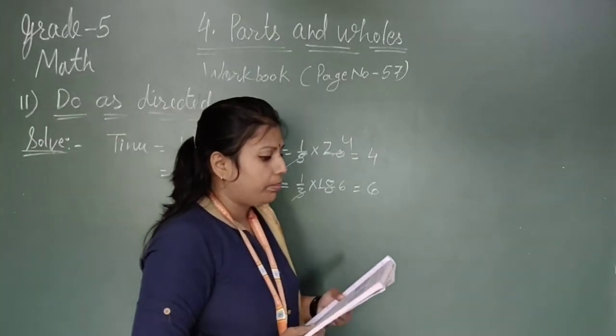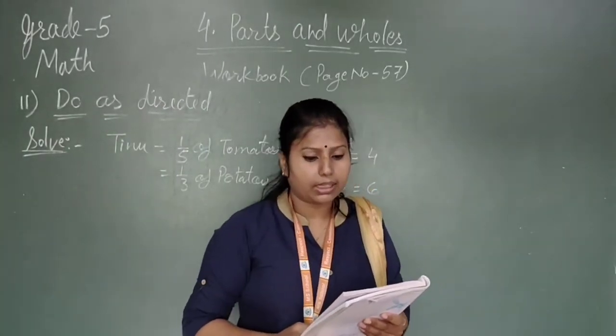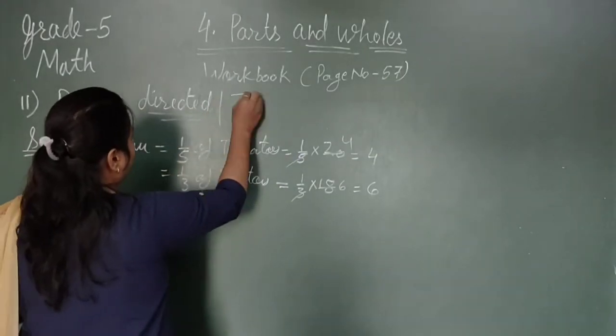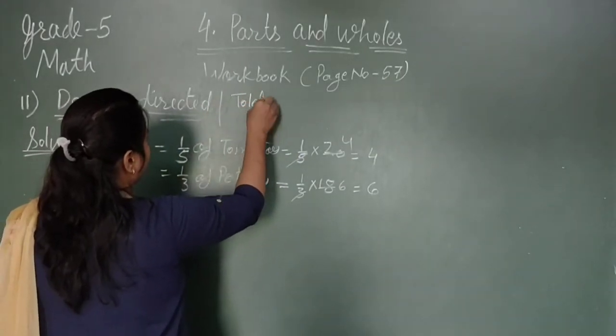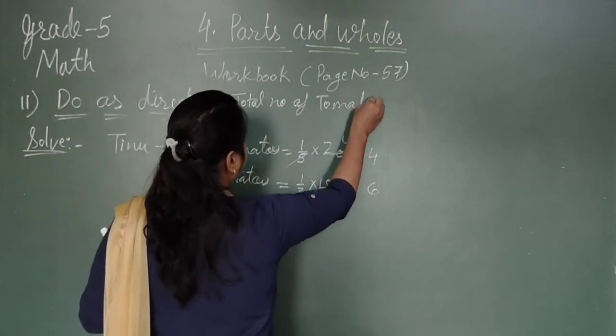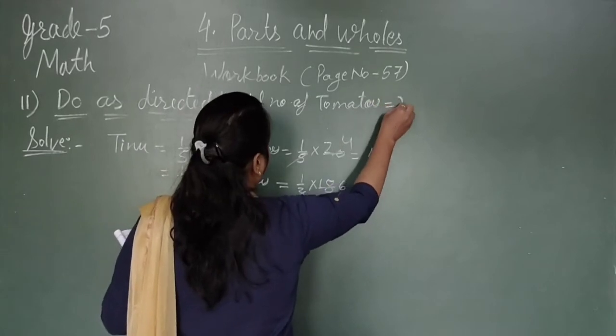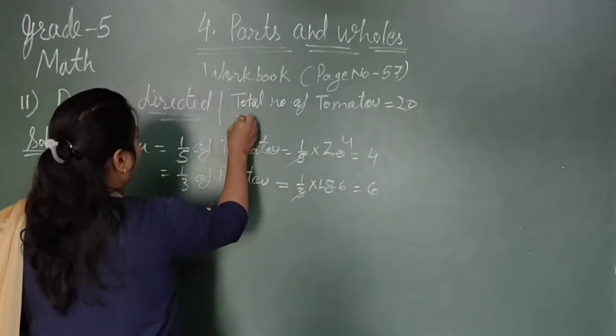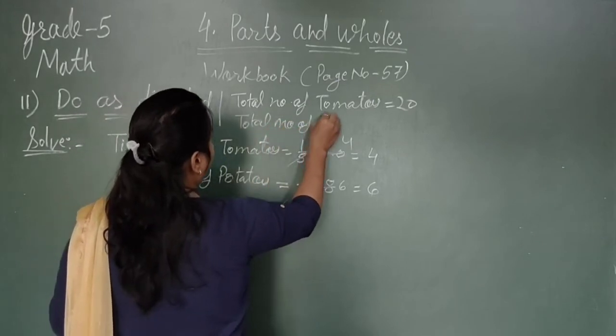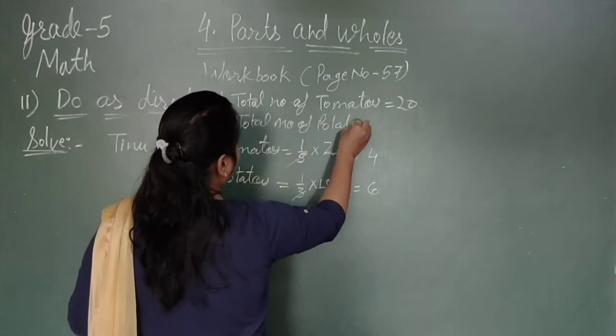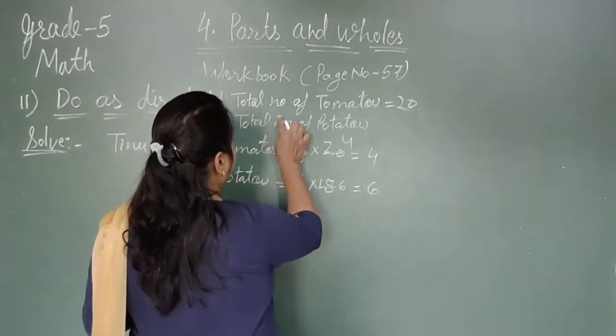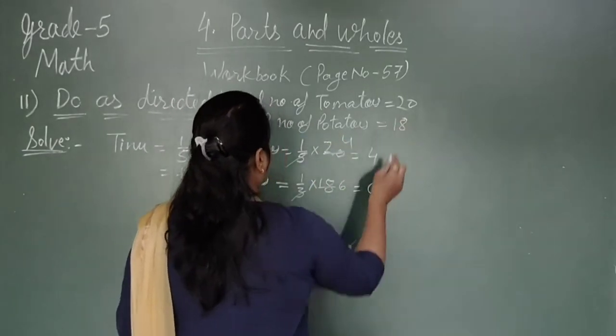Now, we have got two-fifths of the tomatoes. So we have to mention also, here, we have to write the total number of tomatoes which is 20, and the total number of potatoes which is 18.